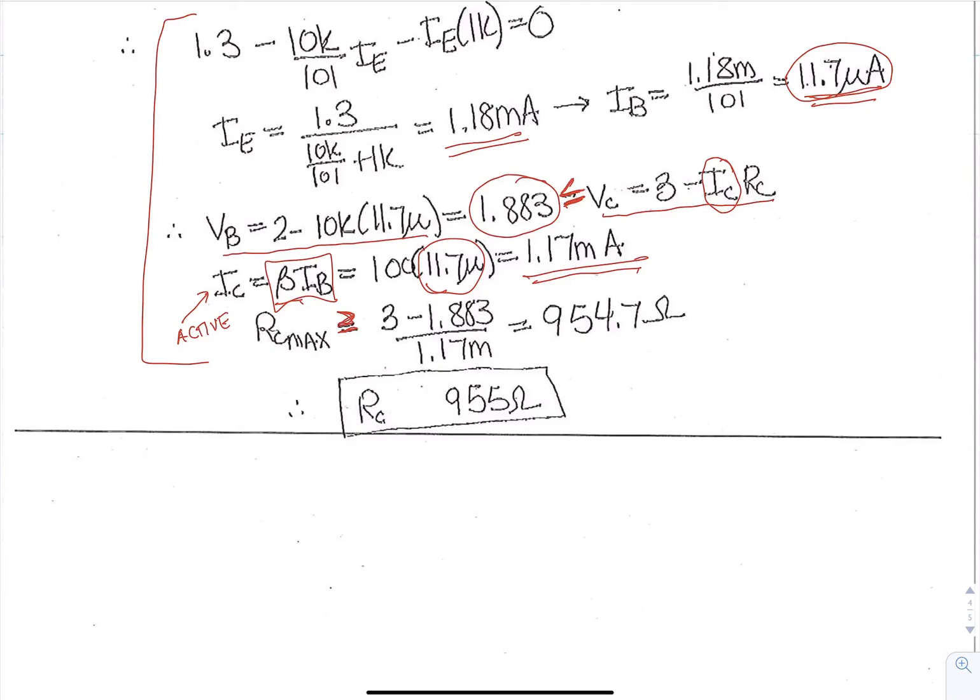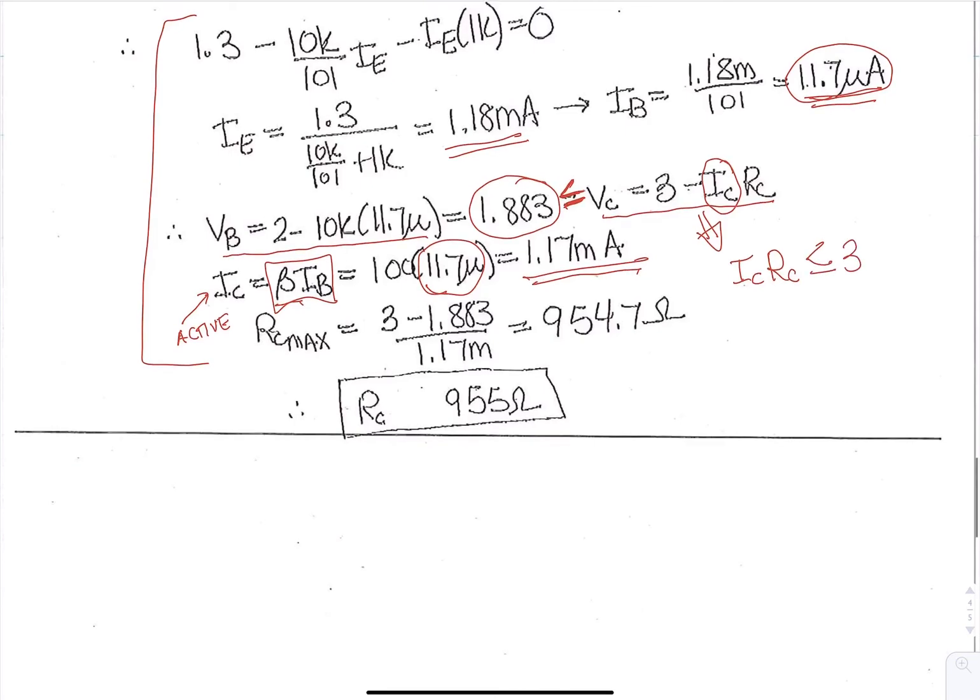And that ends up giving us that RC needs to be greater than or equal to 955 ohms. Sorry, I did that backwards. This needs to be less than. Let's see, because I'm going to take from here, I'm going to take the IC times RC over to the other side, which we'll put it less than or equal to, and then 3 minus 1.883, and then divide by the IC. So it will be less than or equal to that value. So RC needs to be less than or equal to 955 ohms. We'll keep this in saturation. I mean, keep this out of saturation and into the active mode. So when it's equal, it will be right there on the threshold.